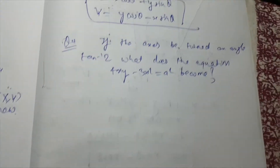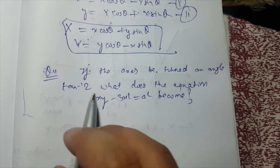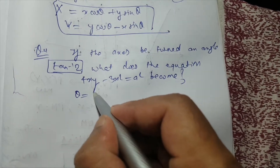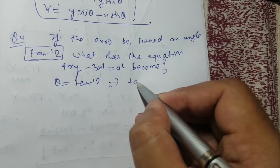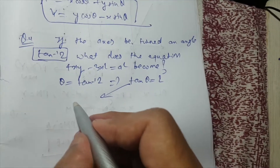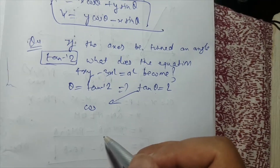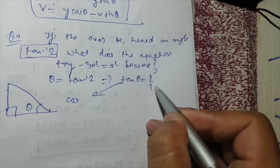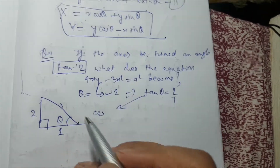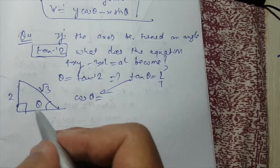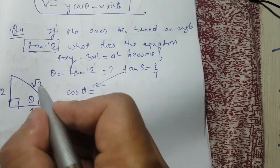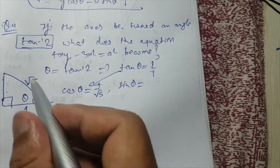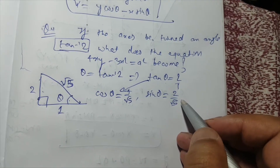To solve this, the angle is tan⁻¹(2), so tan θ = 2. Since we have the tangent, we can find cosine and sine easily. With opposite = 2 and adjacent = 1, by the Pythagorean theorem the hypotenuse = √5. So cos θ = 1/√5 and sin θ = 2/√5.